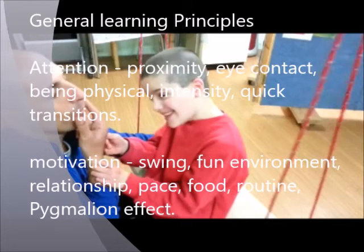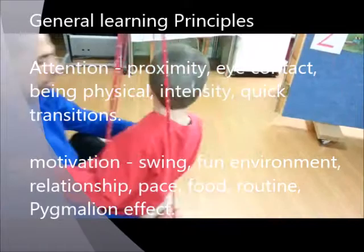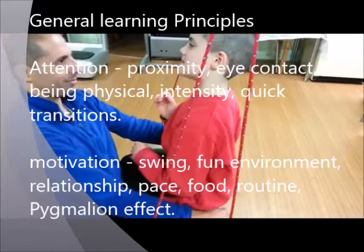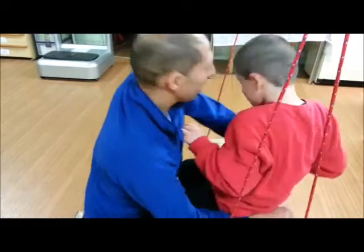The general learning principles found in this video include two major domains: attention and motivation. The use of proximity, eye contact, being physical, intensity, and quick transitions helps to keep the child's attention. In order to sustain a high level of motivation, there is use of the swing, a fun environment, therapist-child relationship, quick pace, food, routine, and the Pygmalion effect by praising the child all the time.